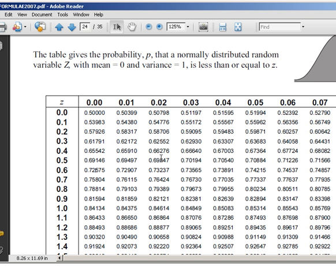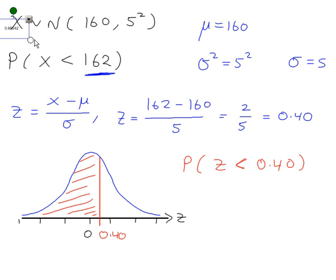The z-value that we're working with is 0.40. The first decimal point comes from this column here, that's the 4, and the second decimal point comes from this row. So the probability that we're looking for is 0.65542.